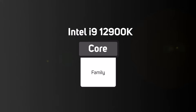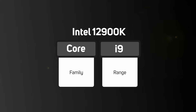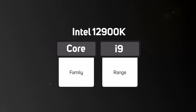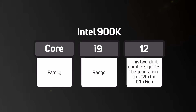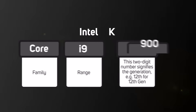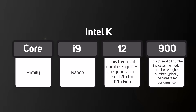Next, i9 is the range. i9 is actually the top end of the range which includes i3, i5, i7 and then i9. Then the next number refers to the generation, so in this case 12 represents the 12th generation of Intel Core processors. And then the remaining three numbers are the specific model number unique to that CPU.